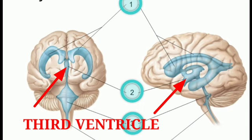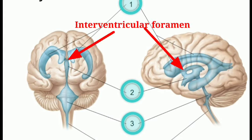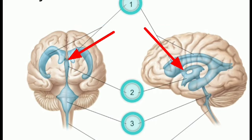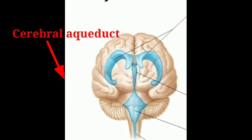The third ventricle is the median cavity situated between the right and left thalami, and is considered the cavity of the diencephalon. The third ventricle communicates on either side with the lateral ventricle; this communication is called the interventricular foramen. Posteriorly, the third ventricle continues into the cerebral aqueduct, which opens into the fourth ventricle.